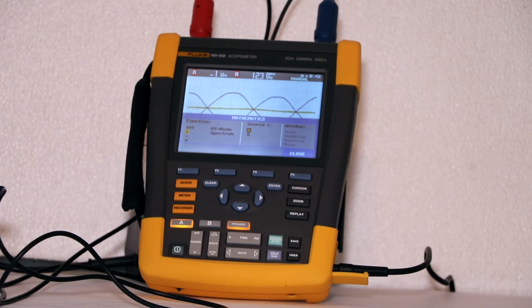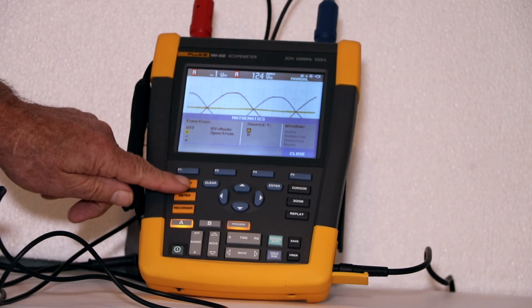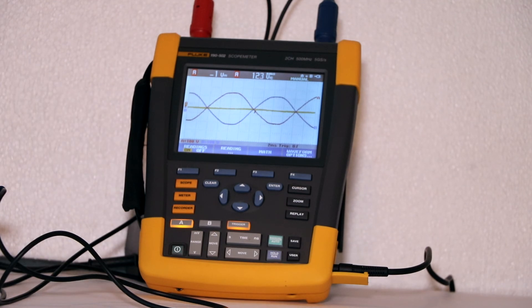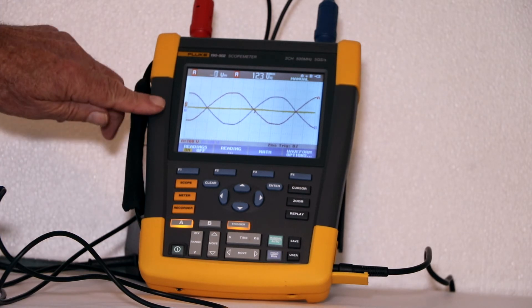You can always make the display look a little bit better by pressing scope. That gets the menus out of the way. The result of the math operation is shown in yellow which is not one of the dedicated channel colors.